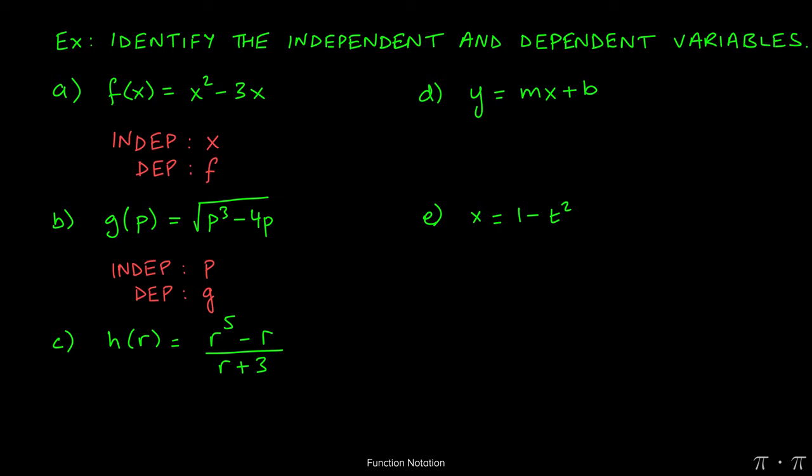Similarly, for h(r) equals r to the fifth minus r over r plus 3, we see that the value of h depends on the value that we choose or assign to r. Therefore, the independent variable is r and the dependent variable is h.